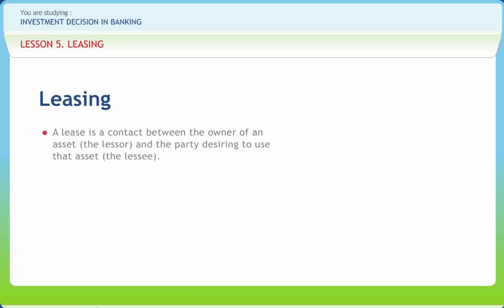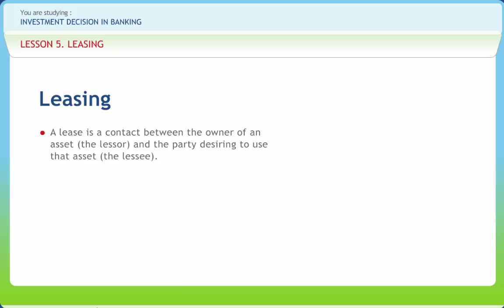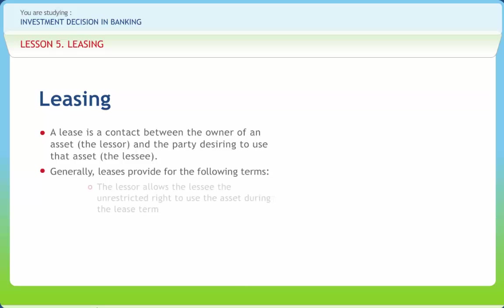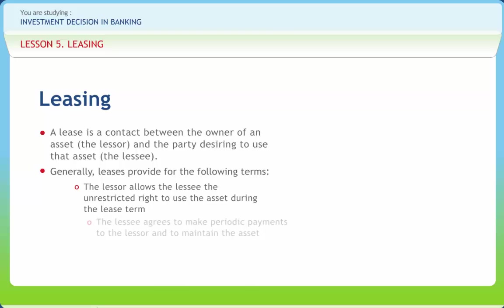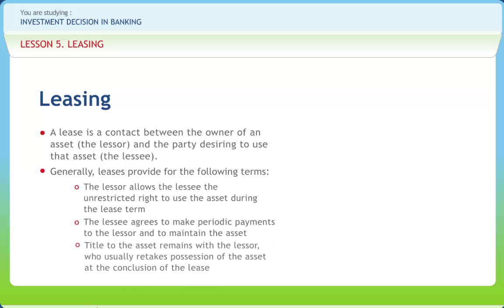A lease is a contract between the owner of an asset, the lessor, and the party desiring to use that asset, the lessee. Generally, leases provide for the following terms: the lessor allows the lessee the unrestricted right to use the asset. During the lease term, the lessee agrees to make periodic payments to the lessor and to maintain the asset, and title to the asset remains with the lessor, who usually retakes possession of the asset at the conclusion of the lease.